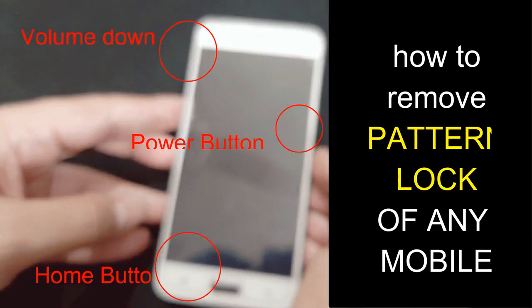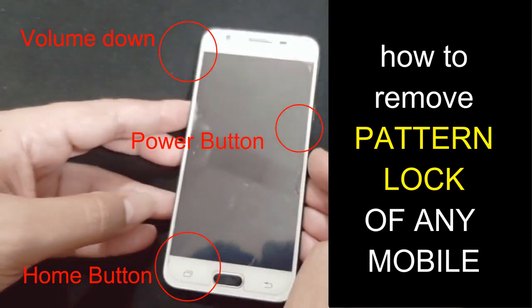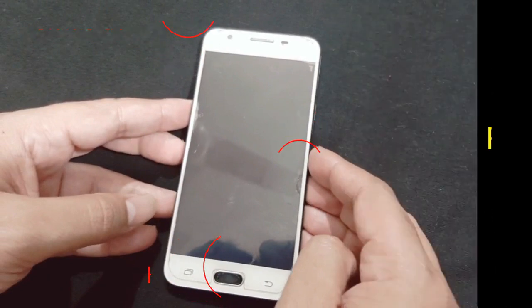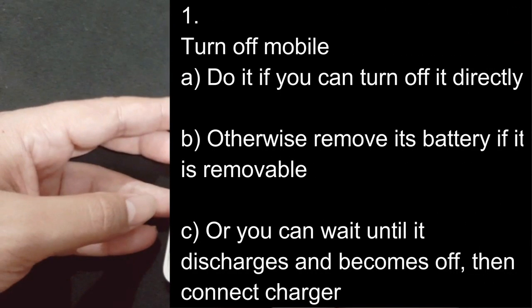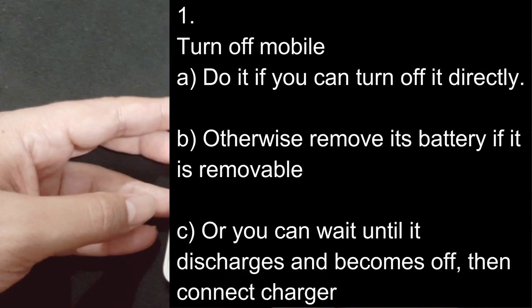You can remove the pattern lock of any mobile. The first step is to turn off your mobile. You have three ways to do it: turn it off directly, remove the battery if it's removable, or wait until it discharges. Then connect your charger. So you have three ways to turn off your mobile.